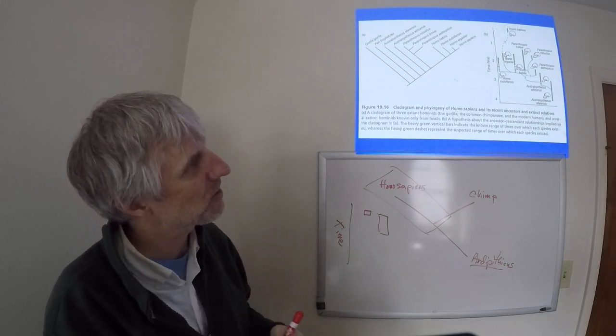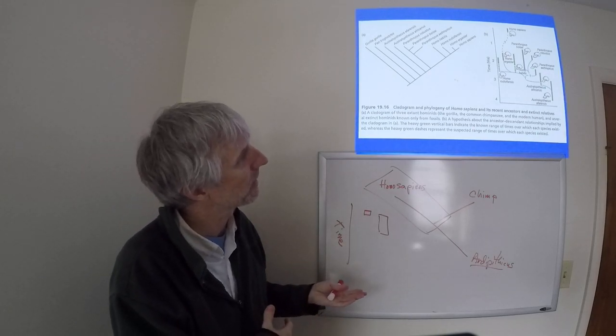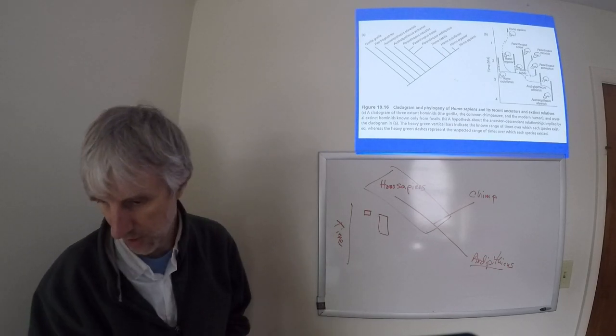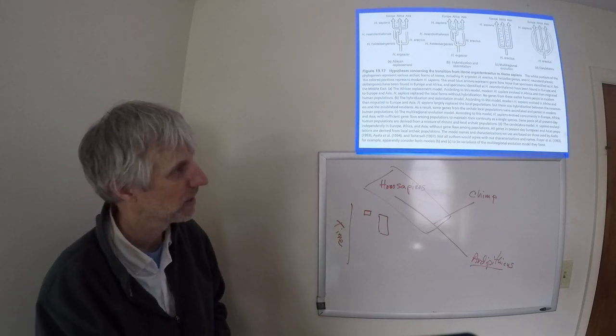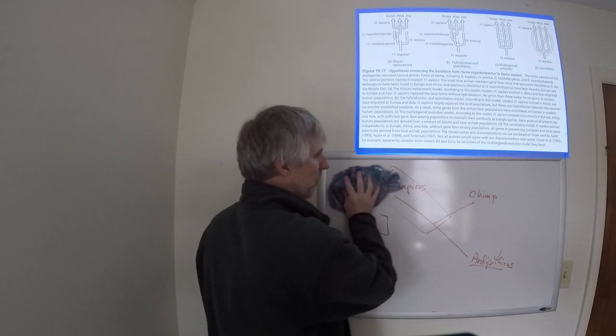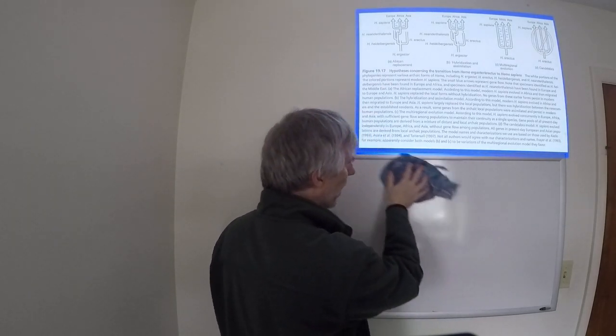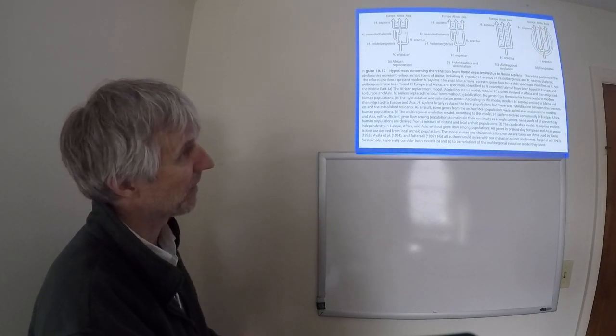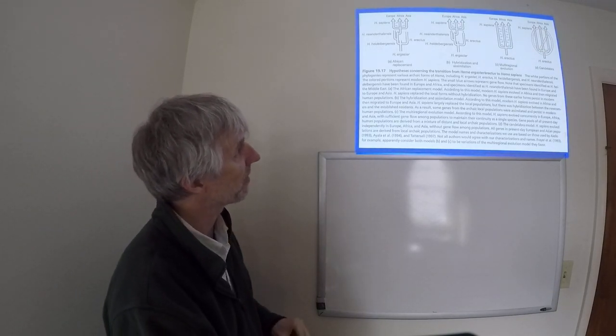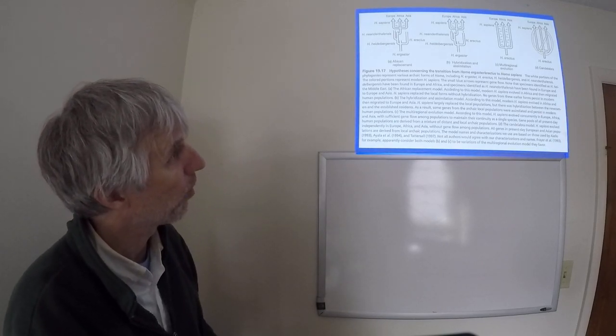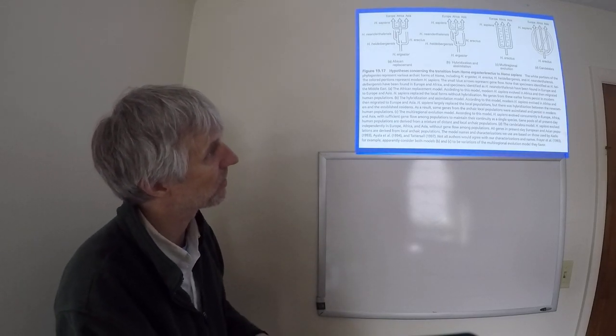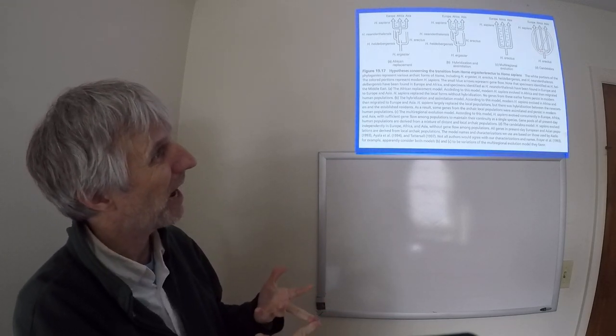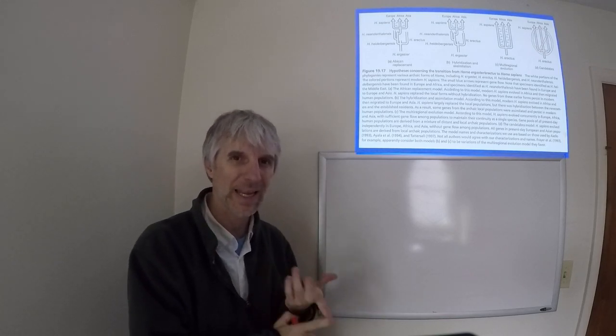There's Homo rudolfensis, Homo habilis, Homo ergaster, Homo erectus, Homo neanderthalensis, et cetera. So, the next few slides talk about kind of where Homo sapiens came from and this transition from what we think is our more recent ancestors, which include Homo erectus, Homo ergaster, Homo heidelbergensis, and Homo neanderthalensis.